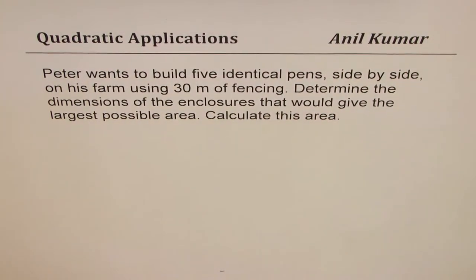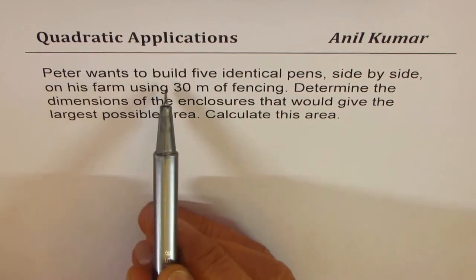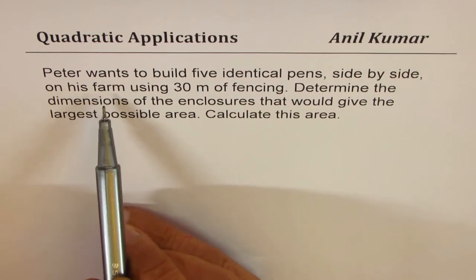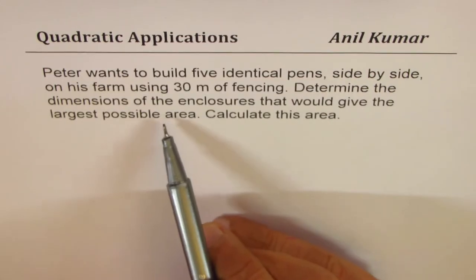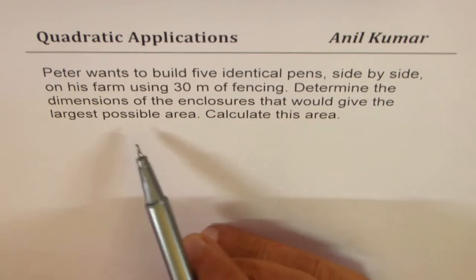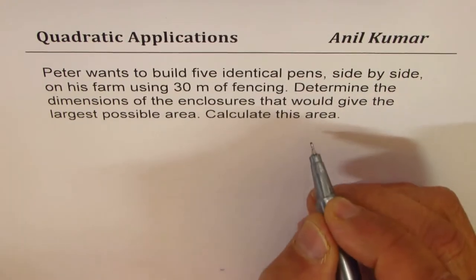I'm Anil Kumar sharing with you an application question based on quadratic equations. Peter wants to build five identical pens side by side on his farm using 30 meters of fencing. Determine the dimensions of the enclosures that would give the largest possible area. Calculate this area.